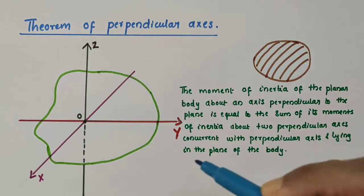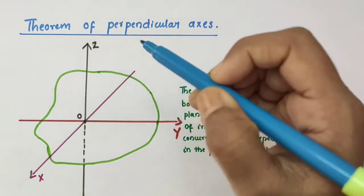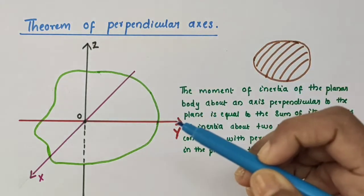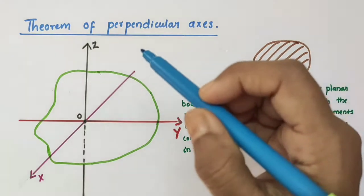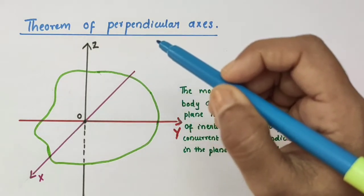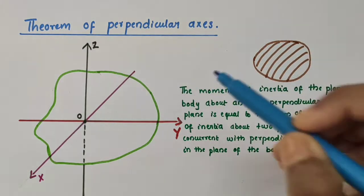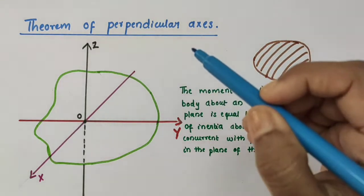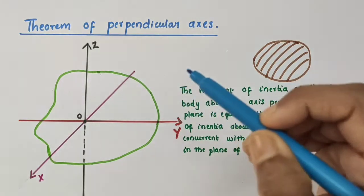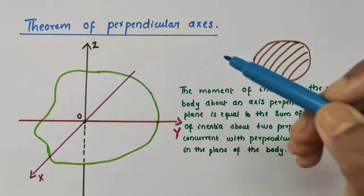In this video we will discuss about the theorem of perpendicular axis, and I will provide the link for the theorem of parallel axis in the description box. The theorem of perpendicular axis is applicable to bodies which are planar — that is, flat bodies whose thickness is very small compared to their length, breadth, radius, etc.